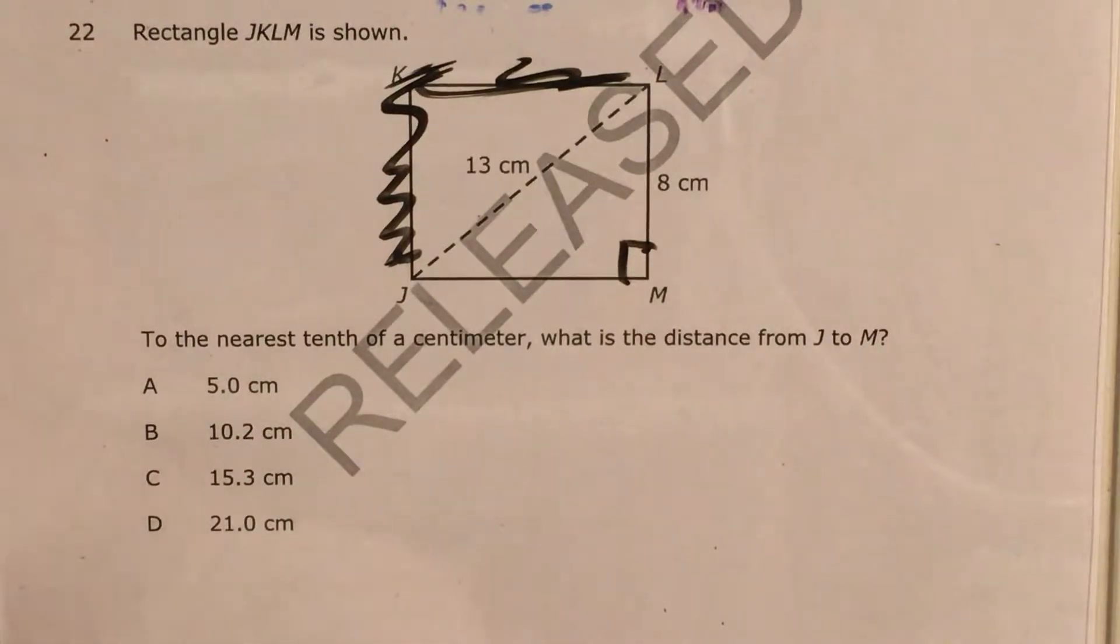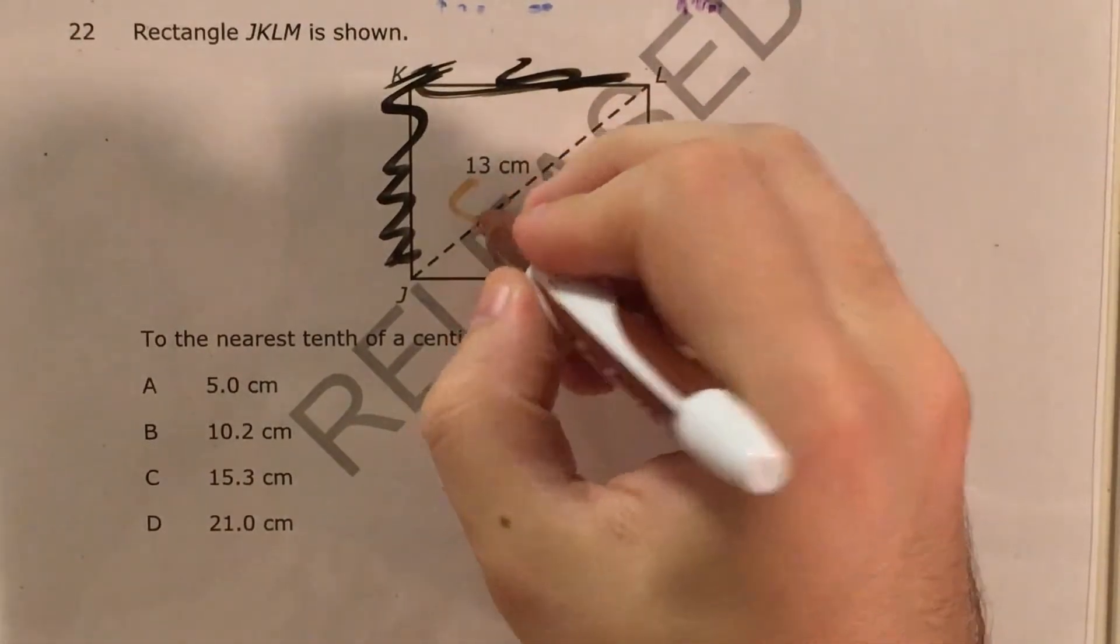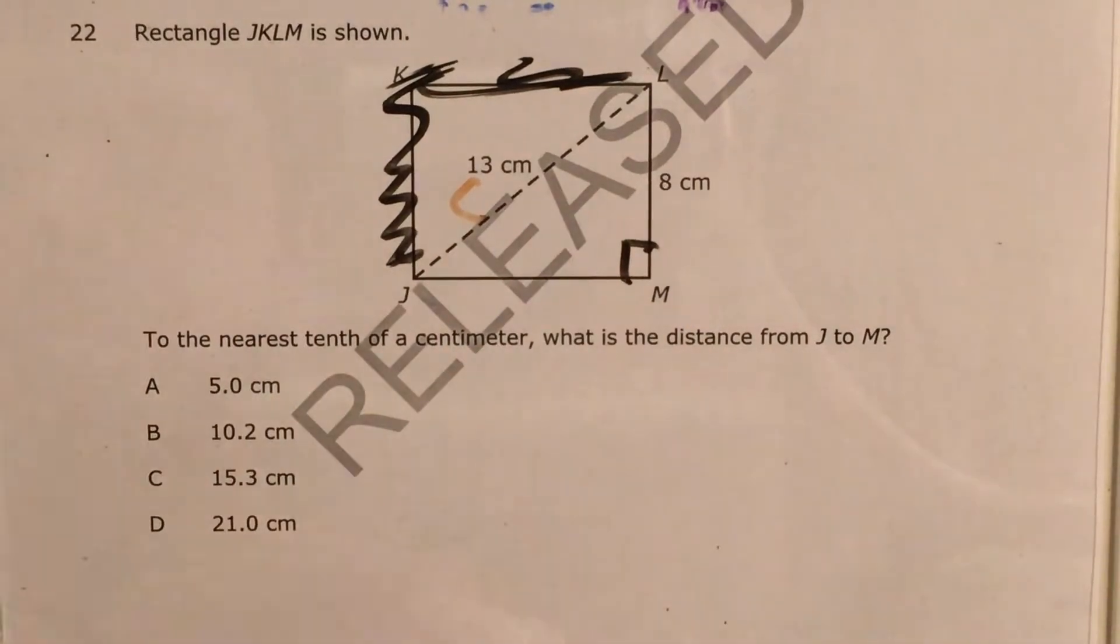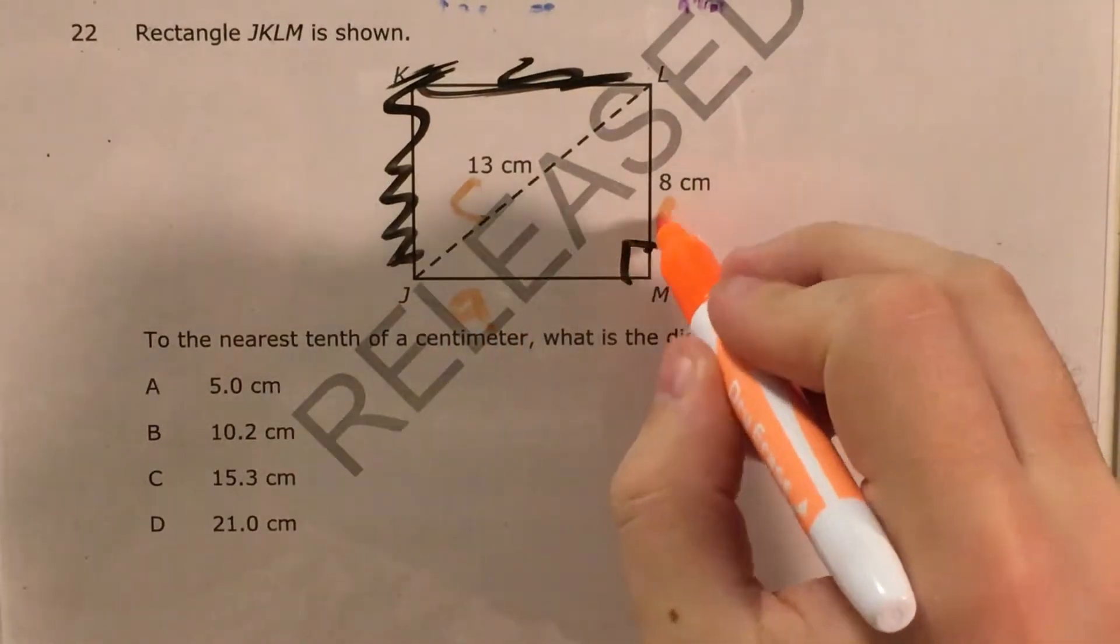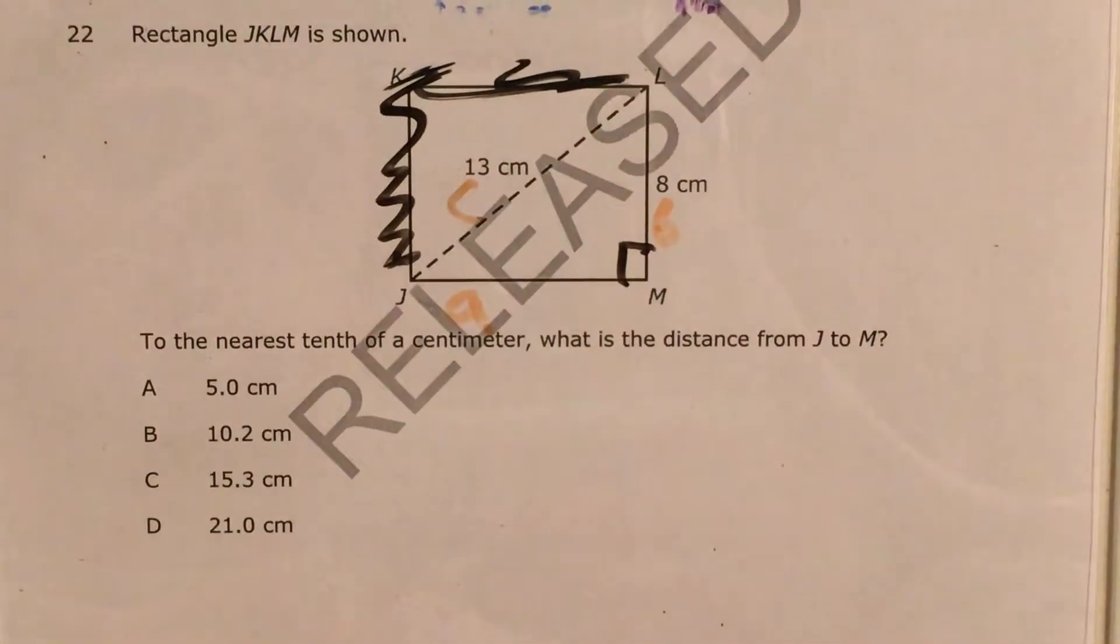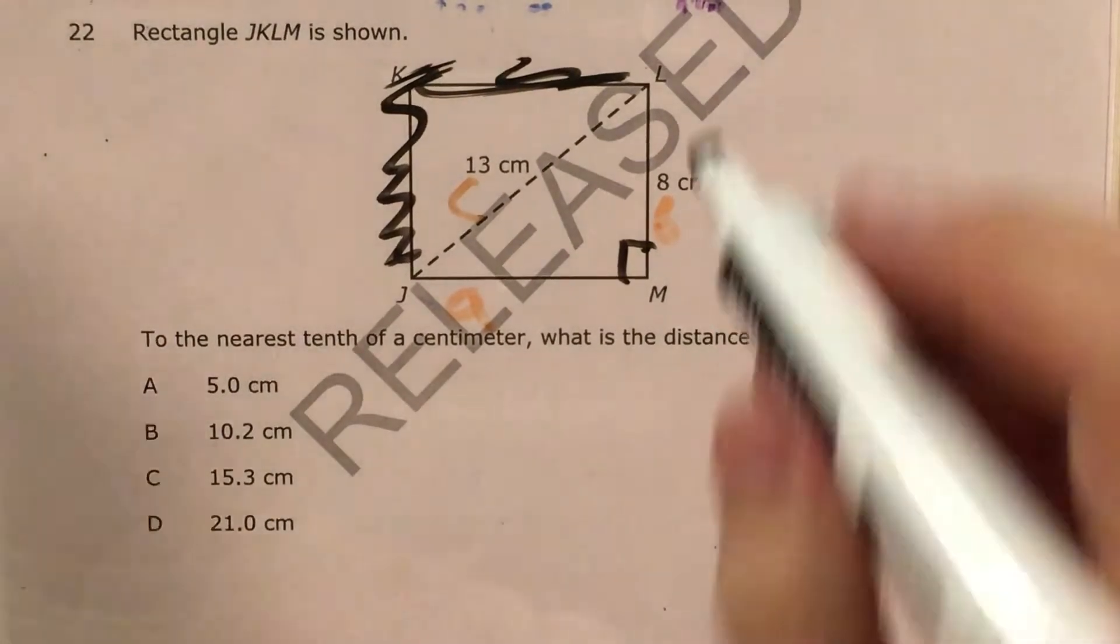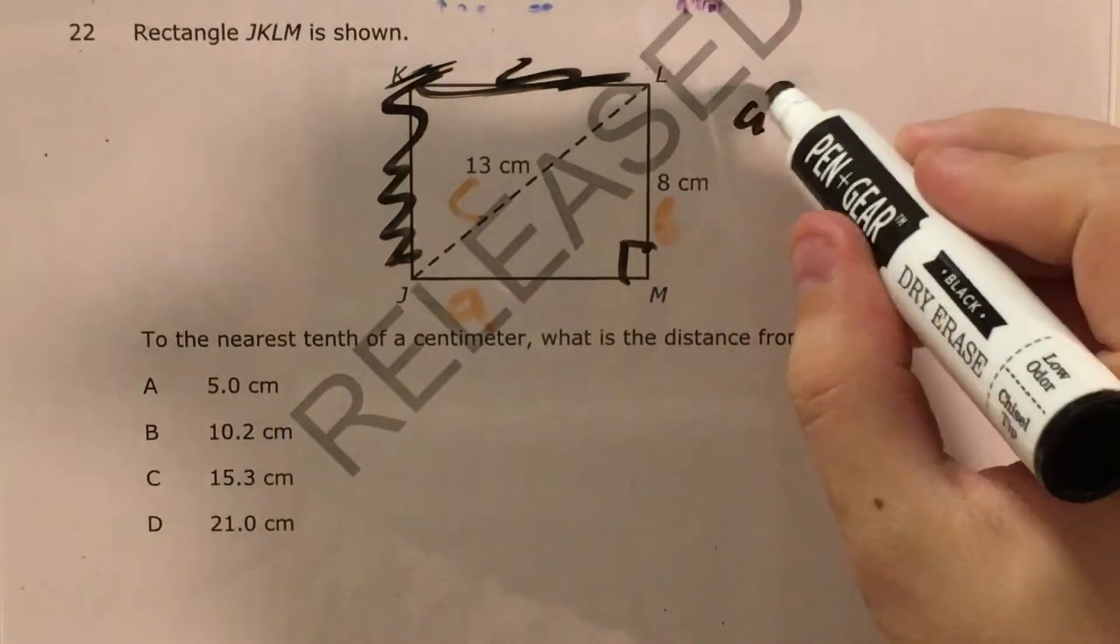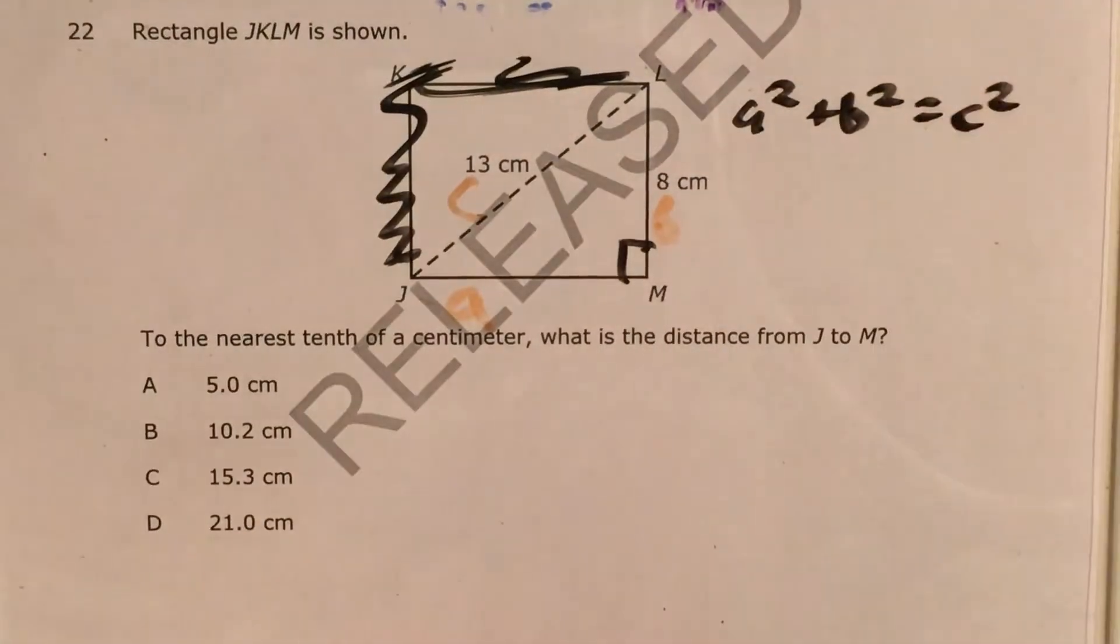Now, every Pythagorean theorem problem is going to be set up the same way. The side across from my right angle, my hypotenuse, I'm going to call it C. And then both of my legs, it doesn't matter which one I call A and which one I call B, but I need to set up the actual formula as A squared plus B squared equals C squared.